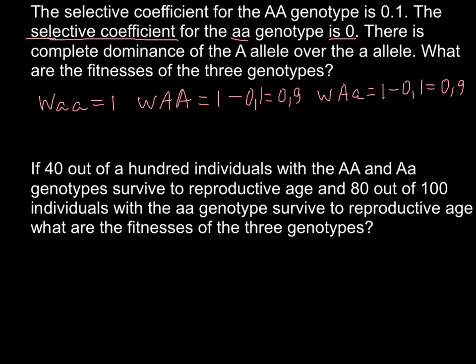Once again, the homozygous recessive has 100% fitness or survival rate, and 0.9 means 90% — so 90% would survive until reproductive age. The heterozygous also shows a 90% survival rate until reproductive age. We can use these numbers as our answers.